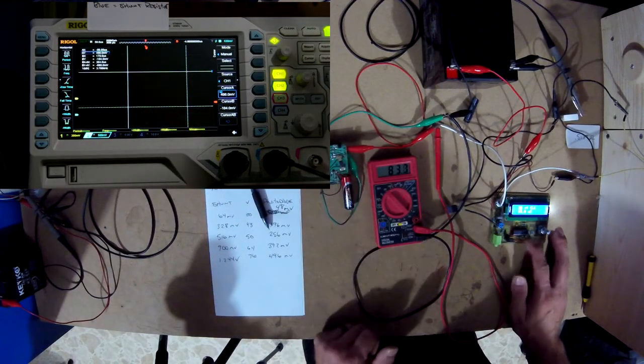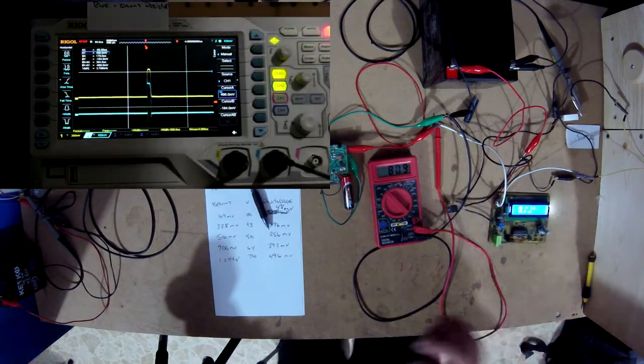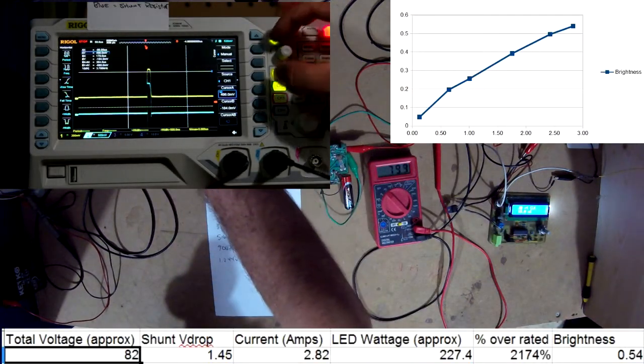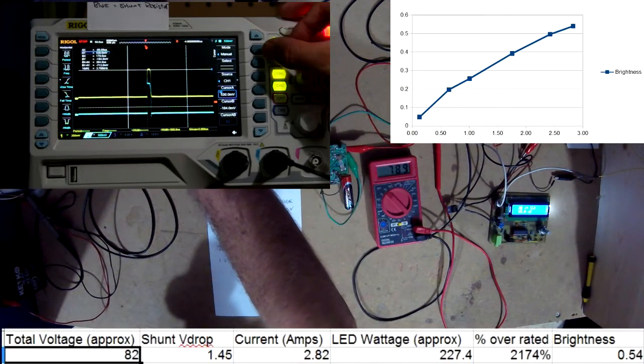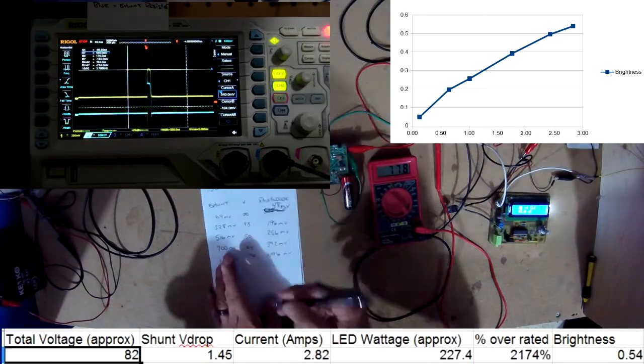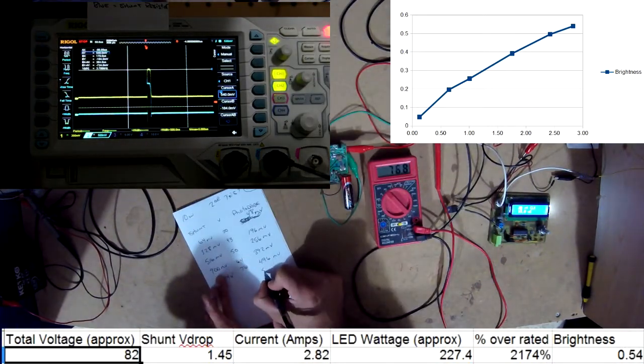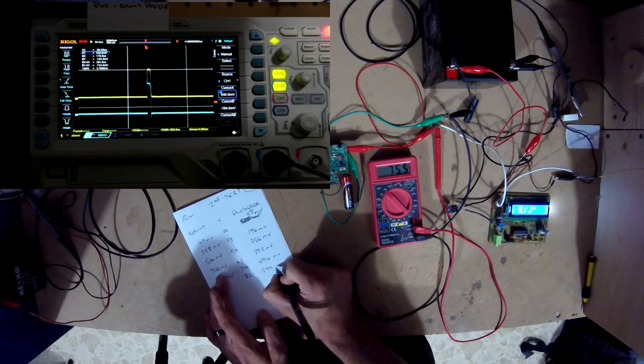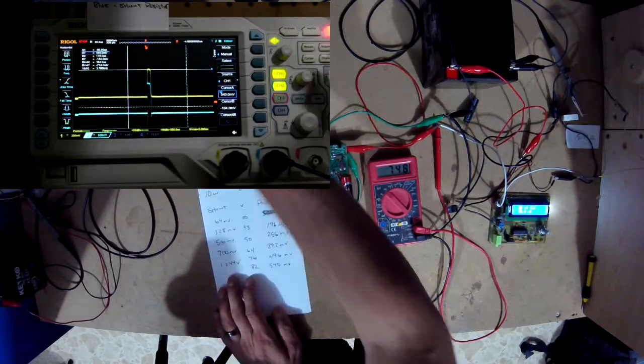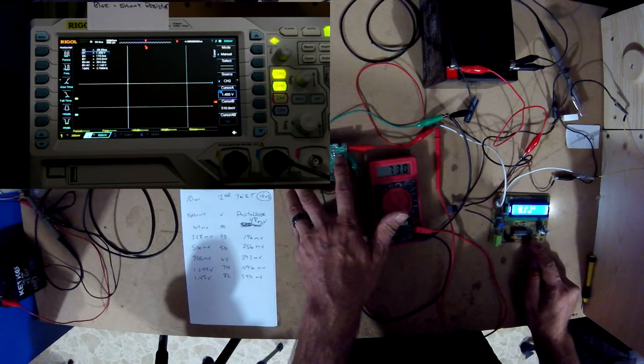82. That's 540 on the photodiode. 82. And let's get it up to like 90 volts.